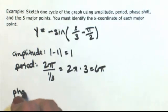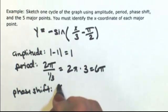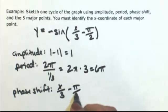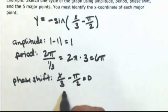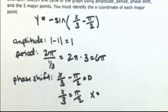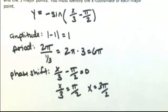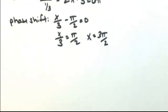To find the phase shift, we're going to set the inside to 0 and then solve for x. So x over 3 is equal to pi over 2, so then x is equal to 3 pi over 2. Okay, so this is a positive number, so that means that we're moving to the right.